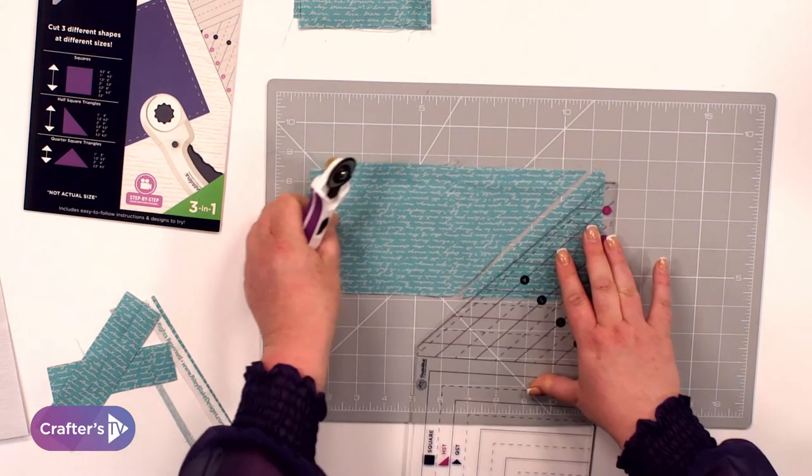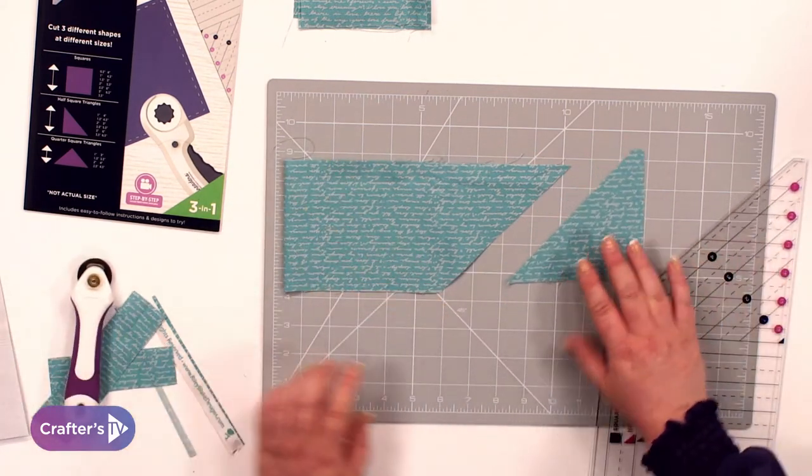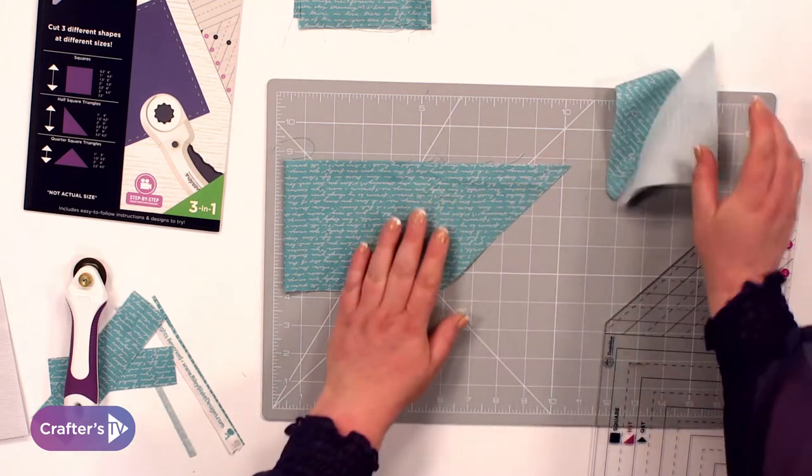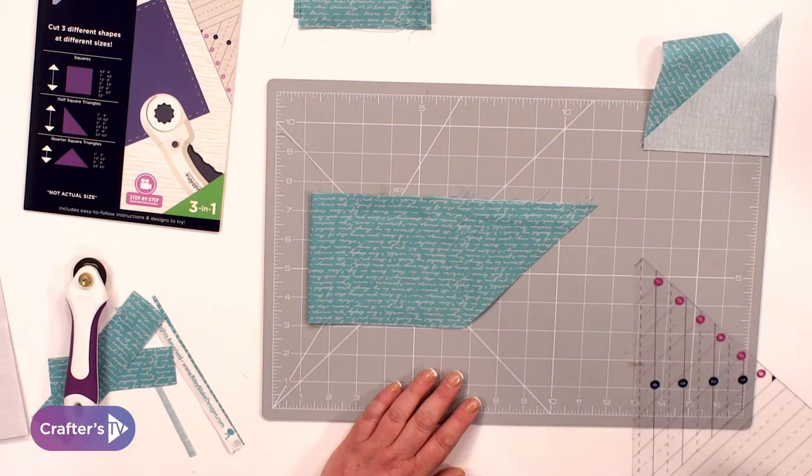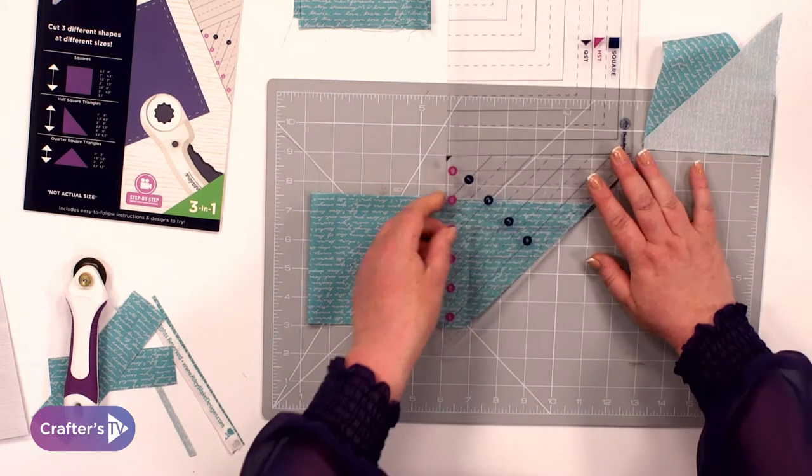So now I've got that lined up. I'm going to come up this way and there I've got my half square triangles, but I've cut two. If you want to cut multiples, all you need to do here is you can leave the fabric where it is. You can just turn the ruler around.